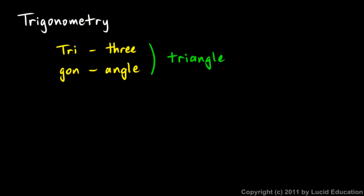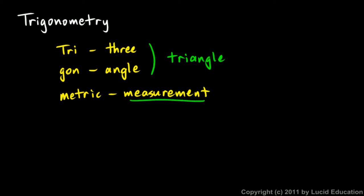So trigonometry deals with triangles. And then the ending, 'metri,' that's obviously related to our word metric, which means measurement. That also goes back to the Greek word 'metron.' So we're talking about measurement and triangles. If you want a definition, you could say that trigonometry is a branch of mathematics that deals with the relationships between the sides and angles of triangles, because those are the things we would measure.